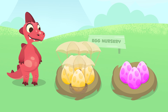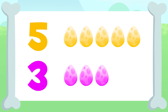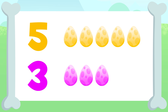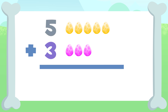Whoa, more eggs are falling down! Let's add them up to find out how many eggs in total you'll have to look after. Up here there are one, two, three, four, and five eggs, and down there we have one, two, and three eggs. We have to add five plus three.